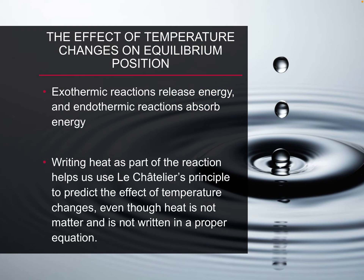Changing temperature does have a big effect on the position of the equilibrium because we have two types of reactions: endothermic and exothermic, and they behave very differently with respect to temperature. What I recommend is to always write heat as either a reactant or a product, and then treat heat just like any other reactant or product — just like when dealing with concentrations. This will help us see whether the equilibrium shifts left or right.